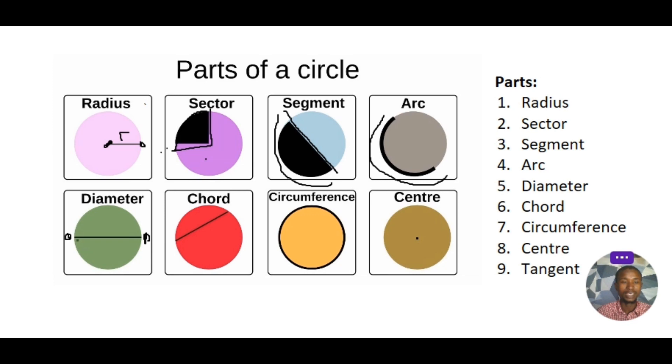Then we have a chord. A chord is the straight line that joins any two points on the circumference. And don't forget that the diameter is a special chord.